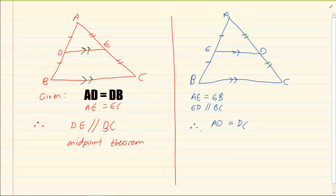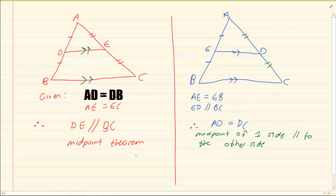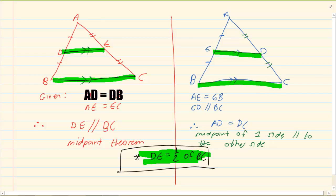For this theorem we say midpoint of one side, parallel to the other. Now the last thing to remember — and this is by far the most important one — is that in both cases DE would equal half of BC. So the most important thing, valid for both rules, is that the top line is half of the bottom line.